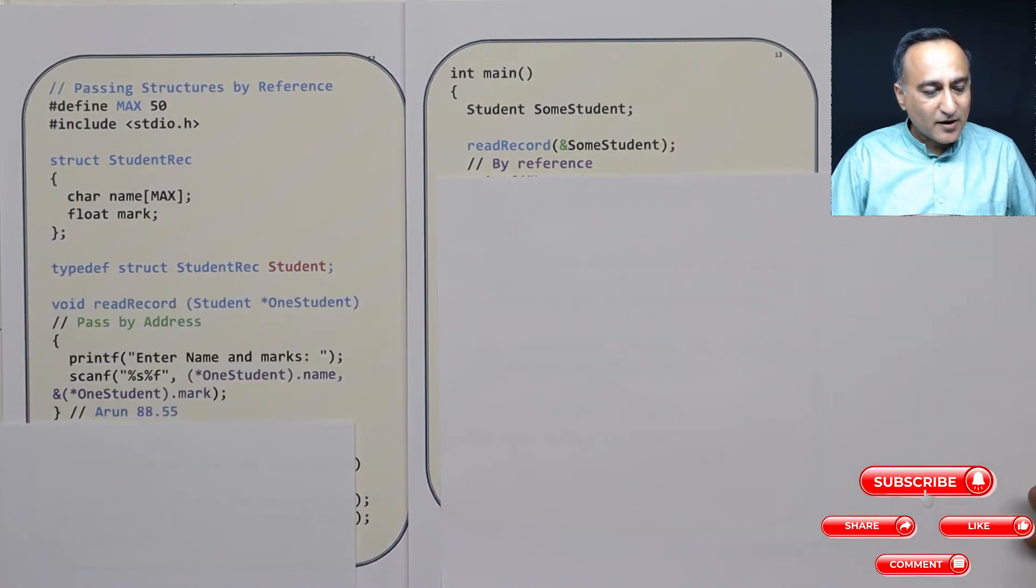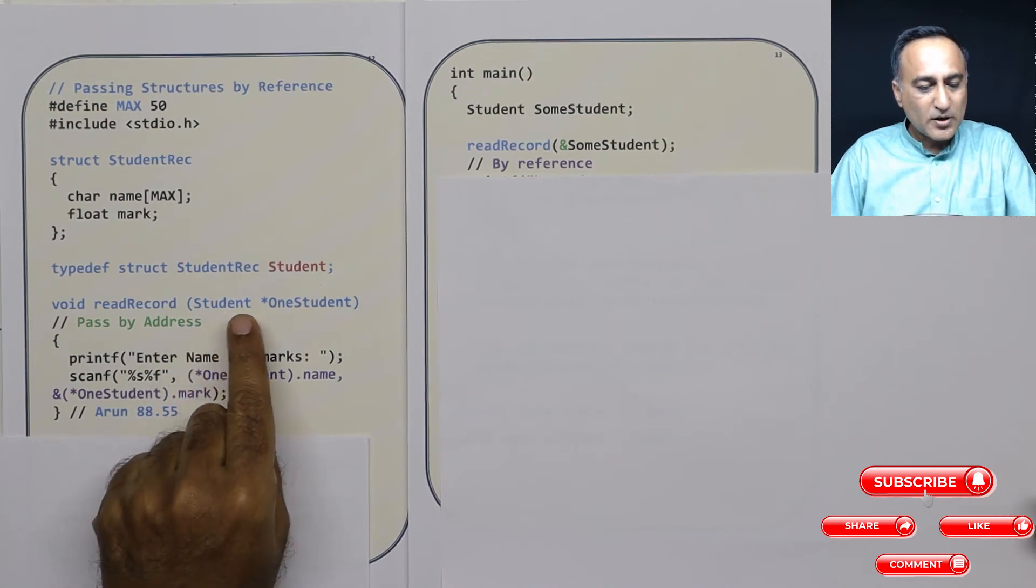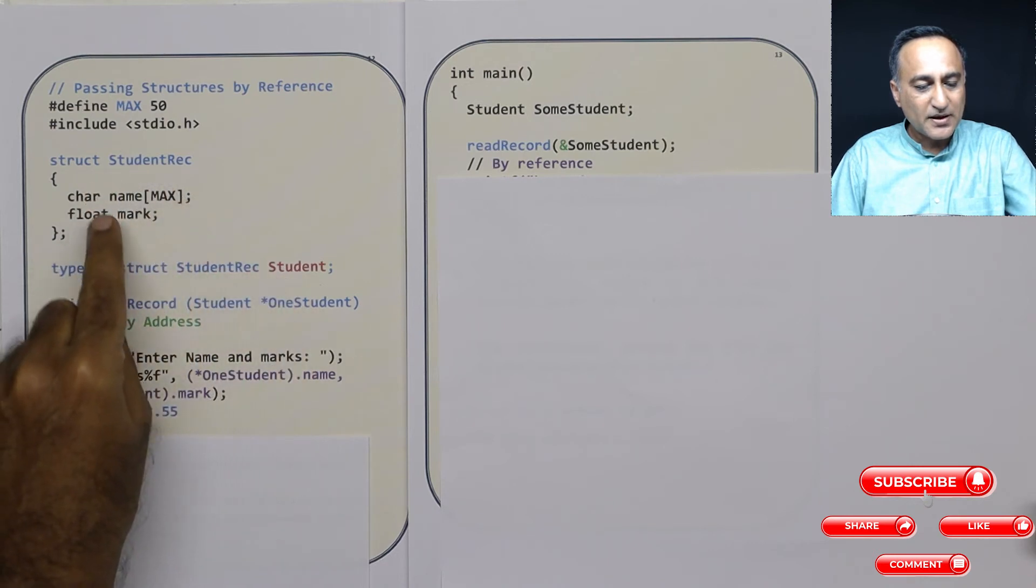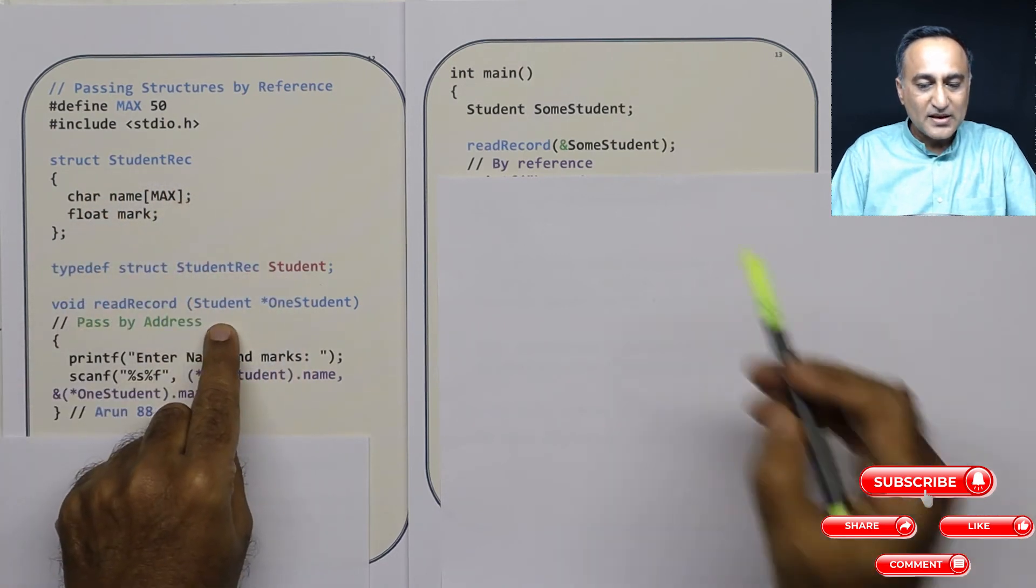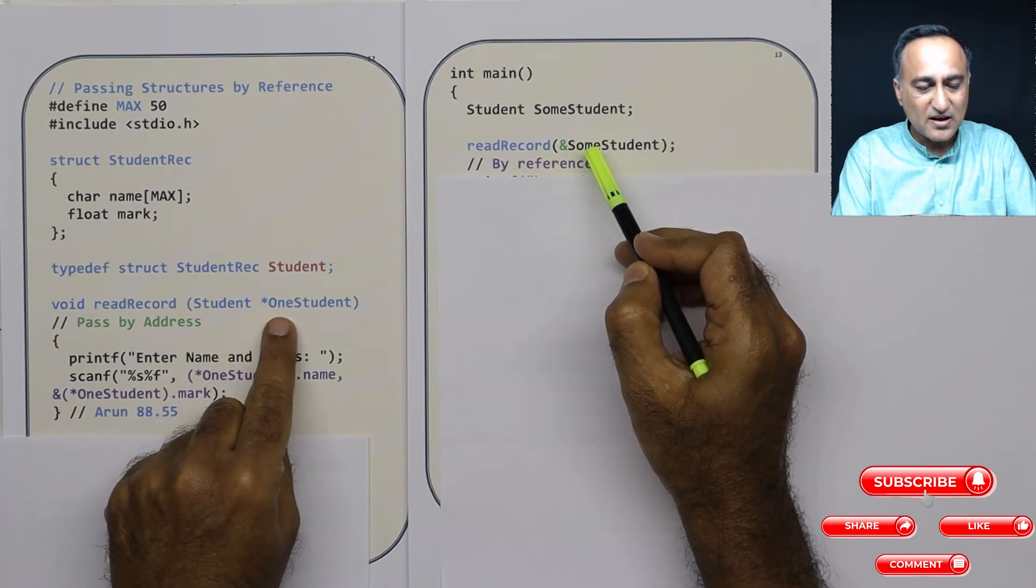Now what I am doing in read record is quite simple. I am saying student, because student reflects the data type of this particular record. Since I am passing the address, this is a pointer. So I am saying star one student.